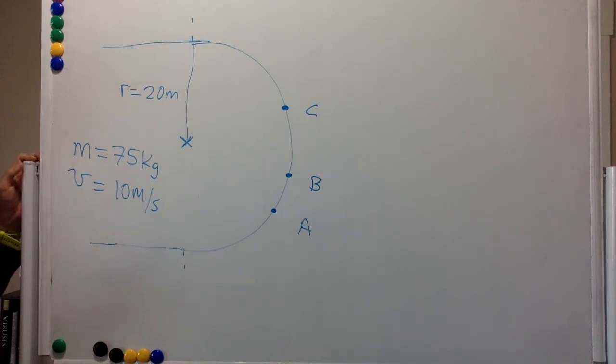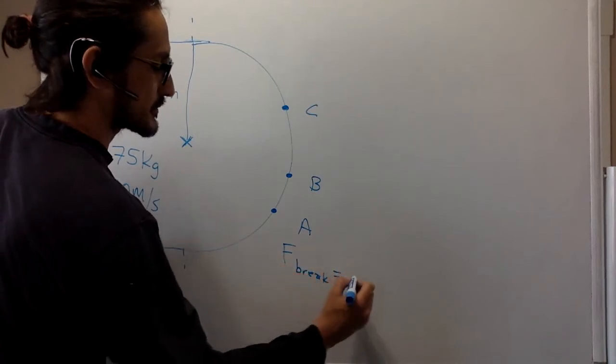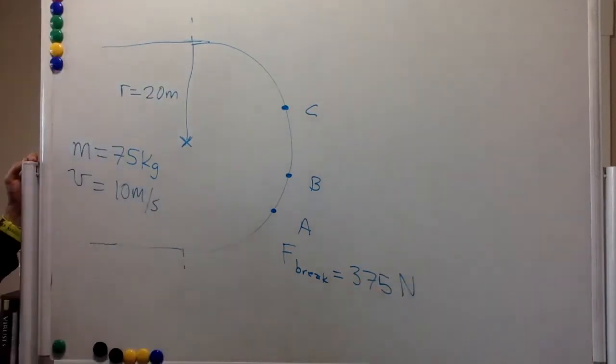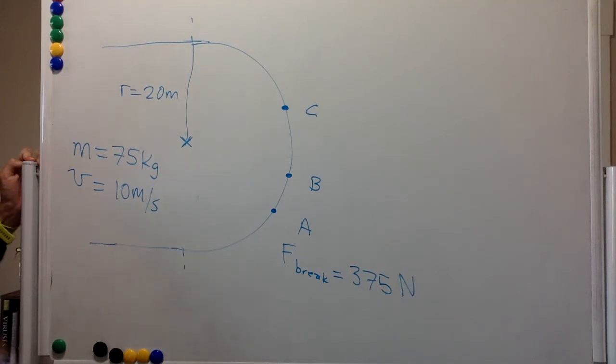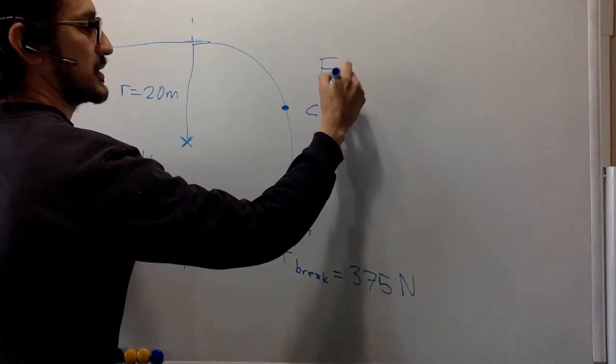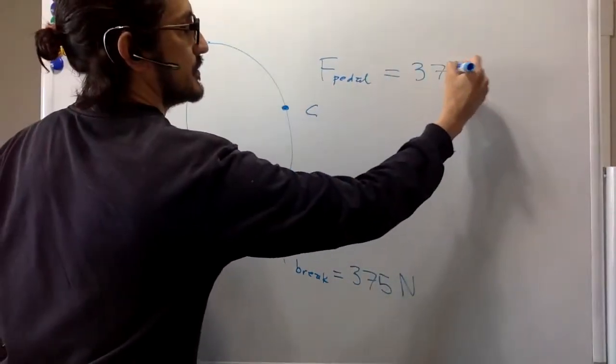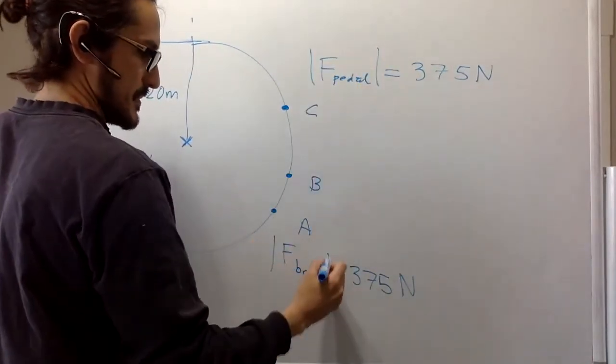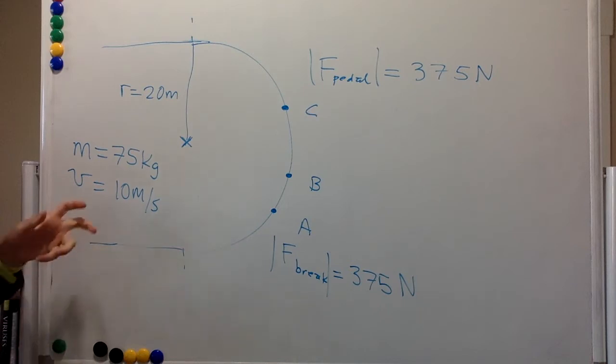Cyclist A over here is using her brakes to apply a force of 375 newtons to her bike. Cyclist B is coasting, so nothing there. And cyclist C is pedaling, resulting in a force of 375 newtons. And we must say that these are magnitudes. So this is the situation.